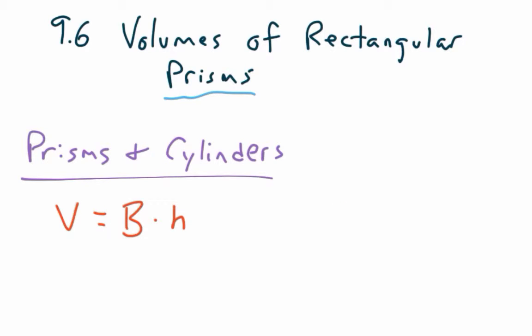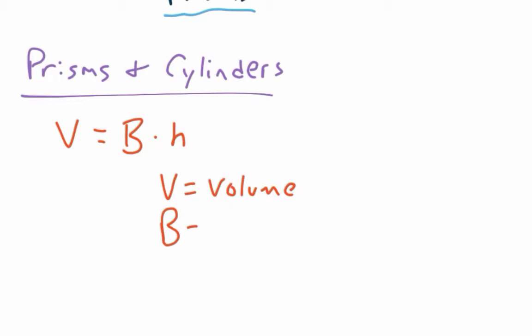So we can use this equation for a cylinder or for a prism, because we're just really figuring out what's the area of the base and multiplying that by the height. So I'm going to say V equals volume, kind of the little key. Capital B equals the area of the base.